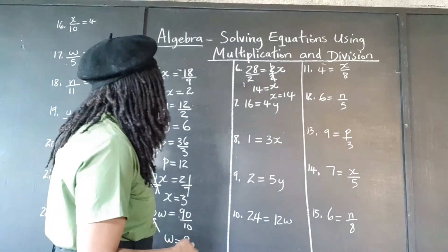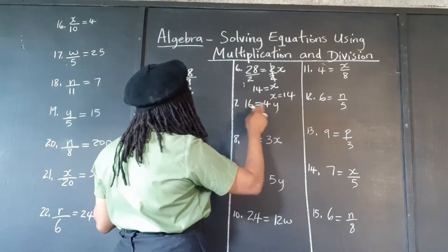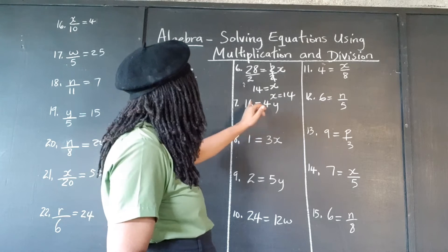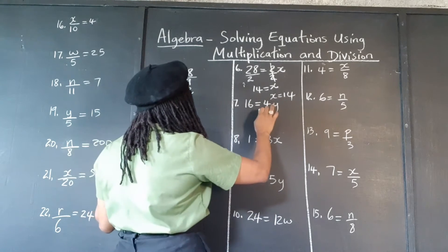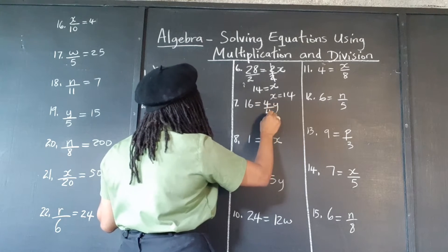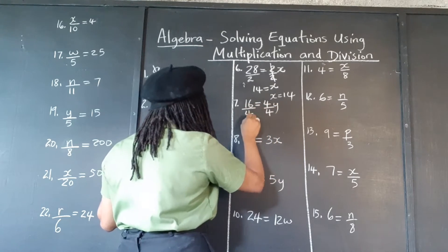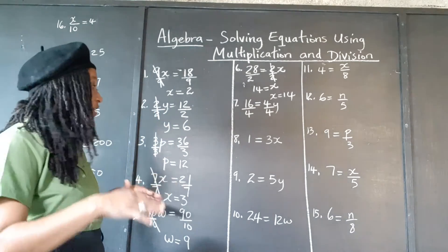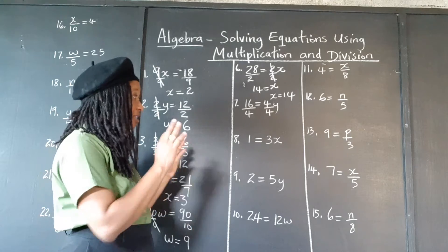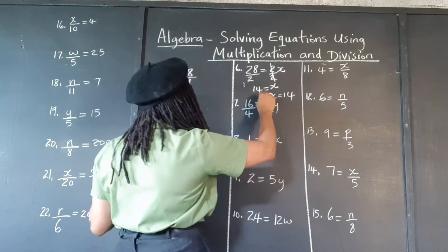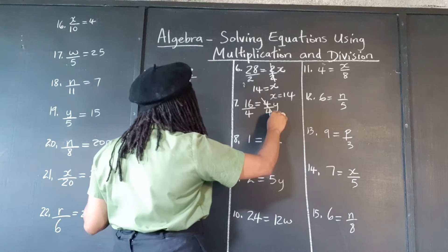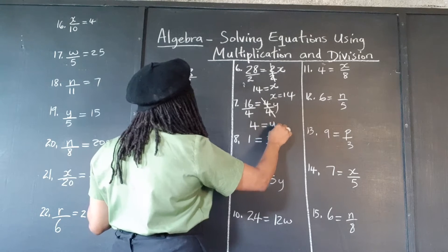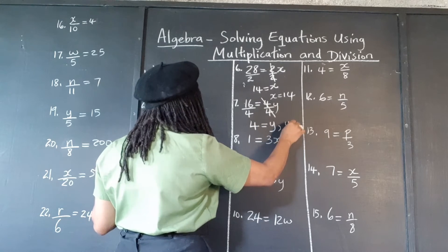16 is equal to 4 times what? What is y? 4 times which number would give 16? We need to cancel out the coefficient of 4. We're going to divide by 4 on both sides — very important, must do it on both sides to balance things so we're not really changing anything. These 4s cancel. 16 divided by 4 is 4. So 4 is equal to y, or y is equal to 4.